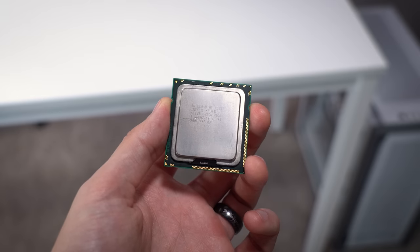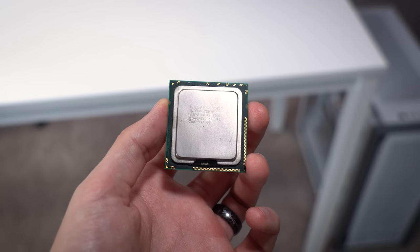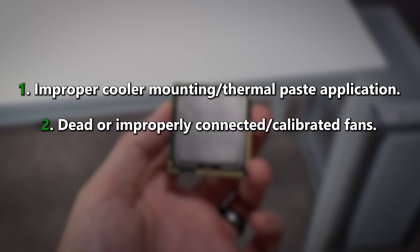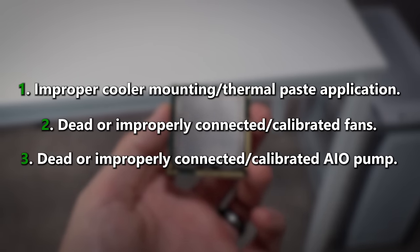If your CPU is overheating — either reaching T-junction or reaching a temperature so hot and unsustainable that the system just cuts off — you've come to the right place. A vast majority of CPU overheating issues come about by one of three means: either improper cooler mounting, dead fans, or in the case of an AIO, a dead pump. In this short video, we're going to talk about ways to check for these issues and prevent them in the future.